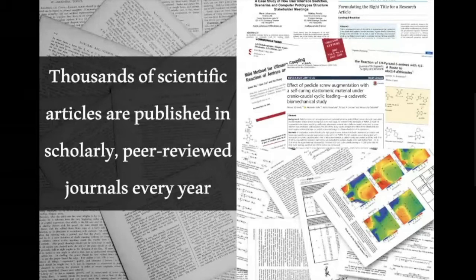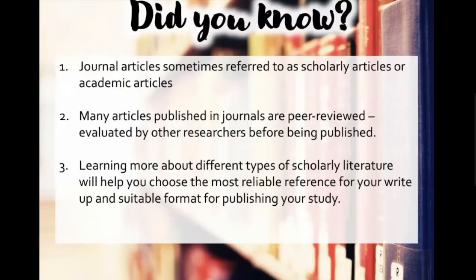There are thousands of scientific articles published yearly in scholarly or peer-review journals. Dr. Tengku already explained different types of databases you can use for literature search and how to assess the peer-review journal. Journal articles sometimes refer to scholarly or academic articles. Many articles published are peer-reviewed, meaning they are evaluated by other researchers before being published.